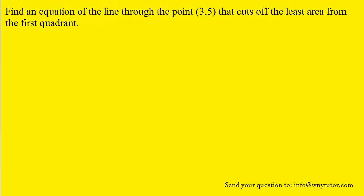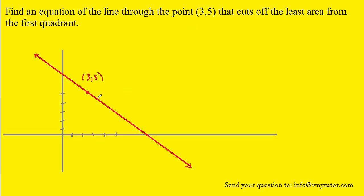If you haven't done so yet, please pause the video and read the question. Let's go ahead and try to draw a picture based on the given information. We've drawn a line that passes through the point and encloses a triangular region in the first quadrant. We can even color in the area of the triangle just to make it clearer.